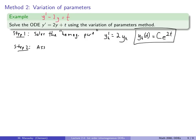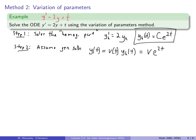Step two is to assume that the general solution is of the form y(t) = v(t)·e^(2t), where v is a mystery function. Notice I dropped the constant c — we'll get a constant of integration back when we integrate later, so we don't need to carry the original one. Our goal is to solve for v.